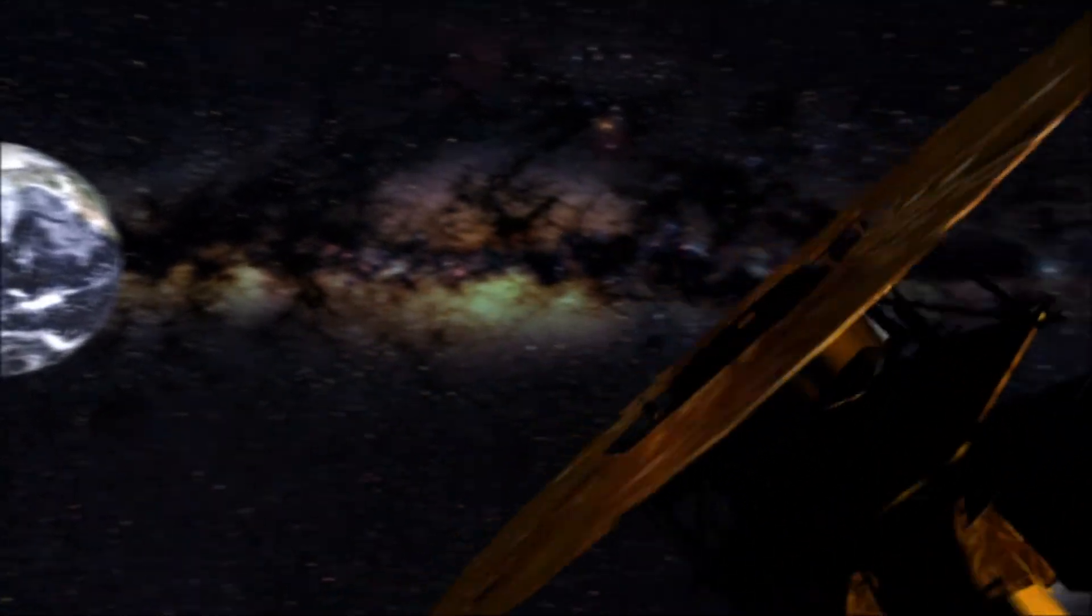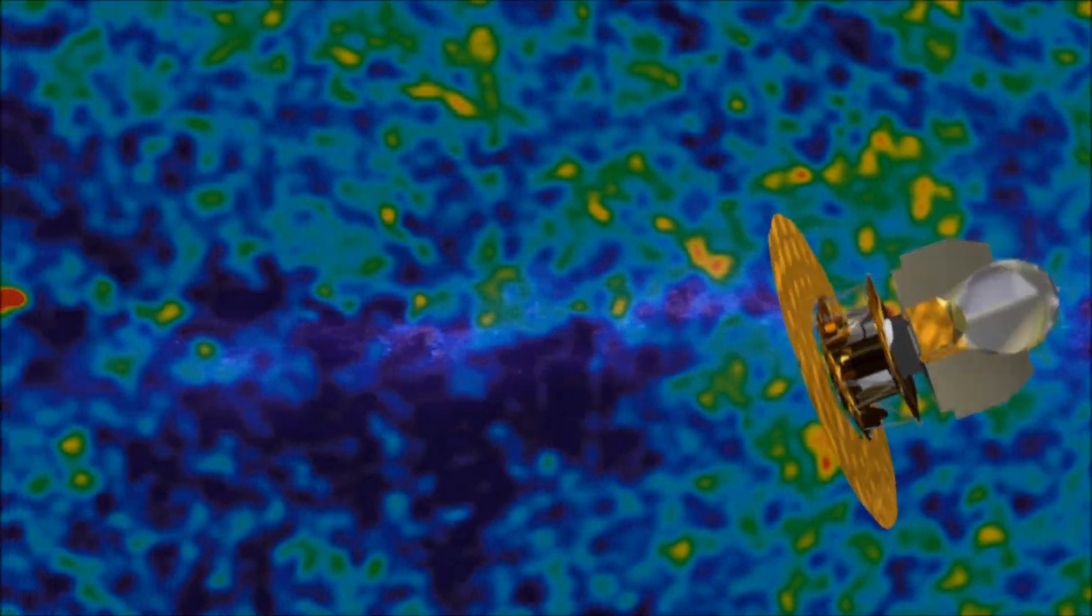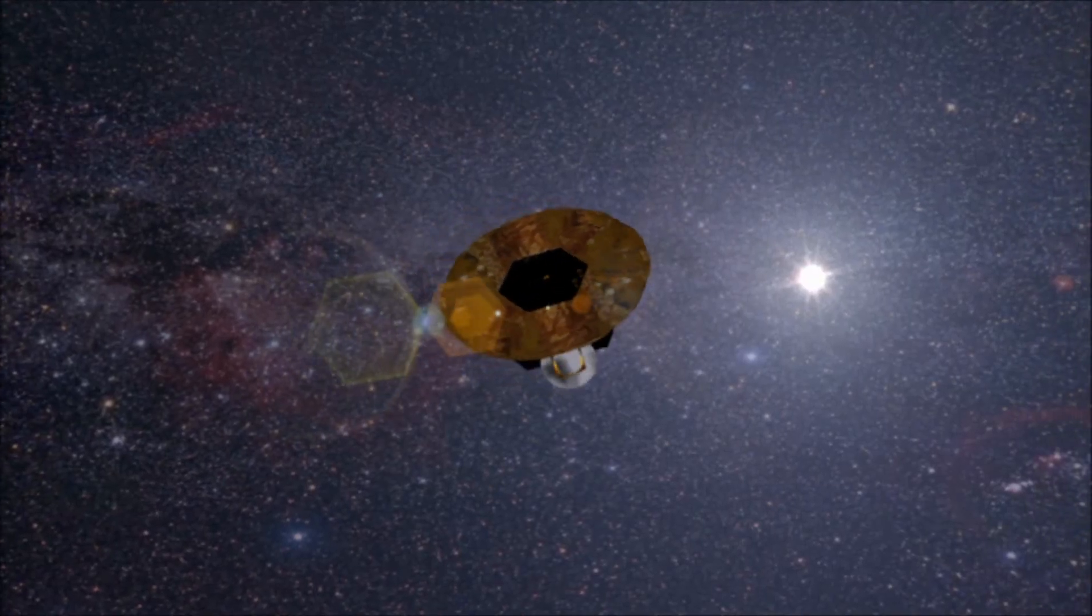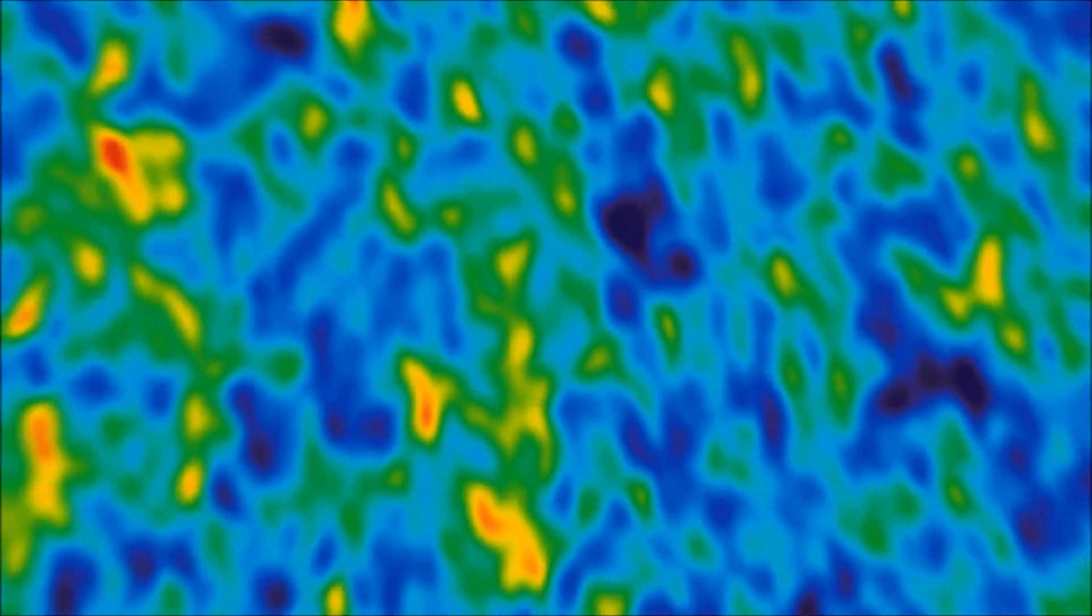And then there's WMAP, the Wilkinson Microwave Anisotropy Probe. In just over two years in space, it had already mapped the cosmic background radiation to unprecedented detail. WMAP gave cosmologists the best view yet of one of the earliest phases of the Universe more than 13 billion years ago.